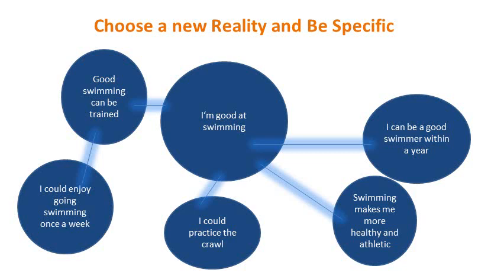Another way to be specific and define a new reality is by scripting it — by writing out a script of the reality you would prefer to be experiencing. Another way to do it is to visualize and imagine that reality. But you have to make it strong enough in order to leave an imprint on the subconscious. So there has to be detail, specifics, and emotion in order to make that imprint. Otherwise it will not be strong enough and the old reality will resurface.